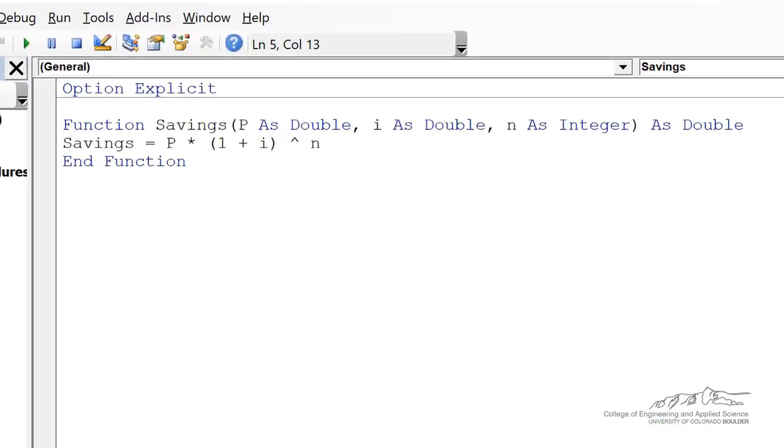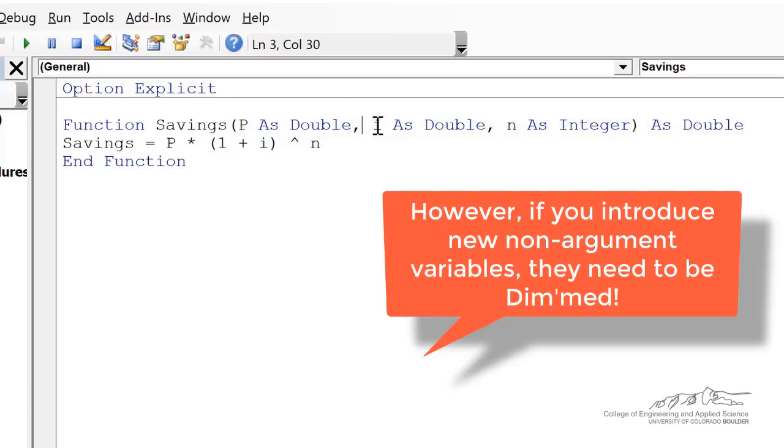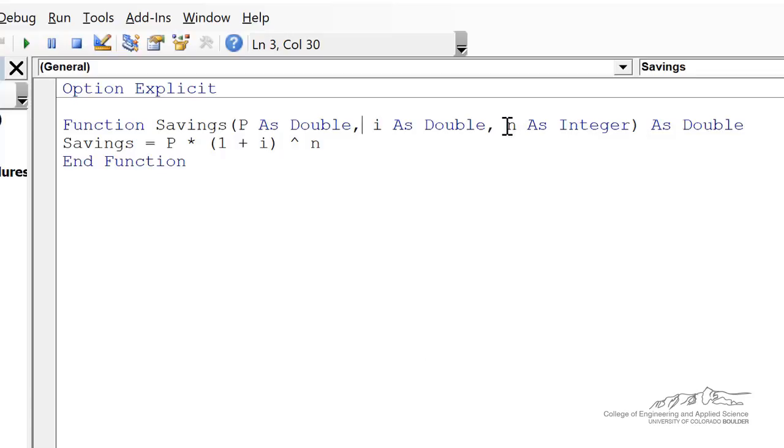So I've typed this into the editor. We have function savings, and the way that you declare variables, you don't have dim statements inside functions. Instead, you say p as double, i as double, so those are real numbers, p and i. n is only going to be integers, so you can dim it as an integer, takes up a little less space. The output that's going to be provided by the function is a double, so we put it at the end.